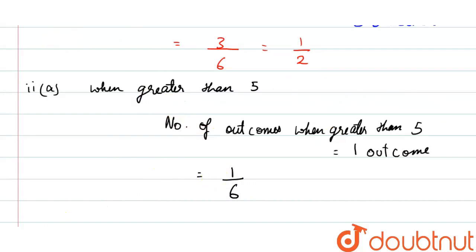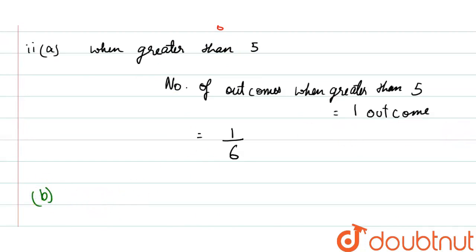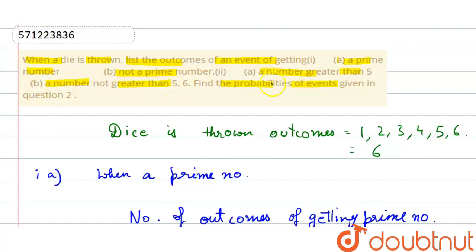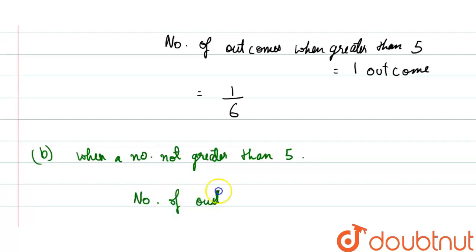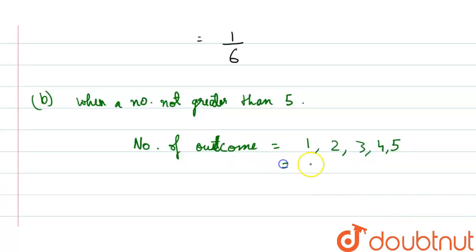For part B — a number not greater than 5. The outcomes are 1, 2, 3, 4, and 5 itself, because the question asks for numbers not greater than 5. The only number greater than 5 is 6, so we have 5 outcomes. By the formula, 5 divided by the total number of outcomes 6 gives us 5/6.